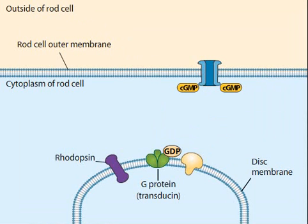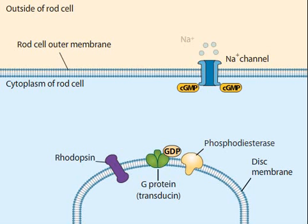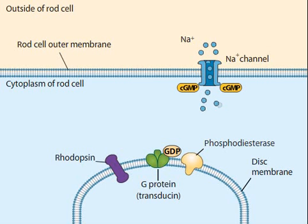and molecules of the enzyme phosphodiesterase. The rod cell outer membrane contains a type of sodium channel that is held open by the binding of cyclic GMP molecules. The open sodium ion channels allow sodium ions to flow spontaneously from a higher sodium ion concentration outside the cell to a lower concentration inside the cell, thereby depolarizing the cell.